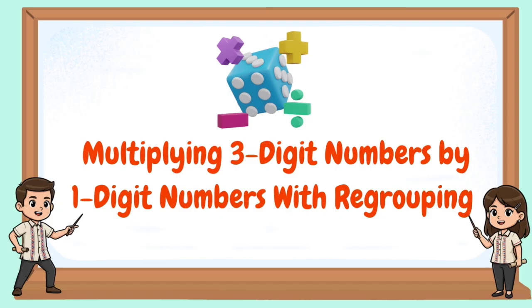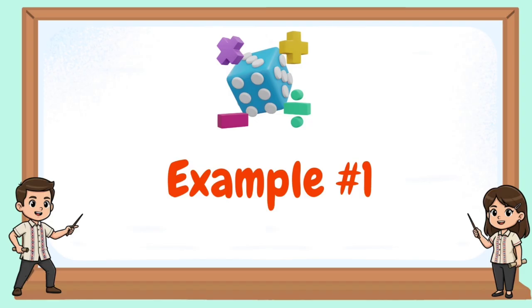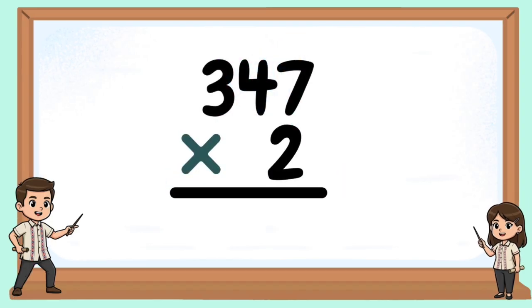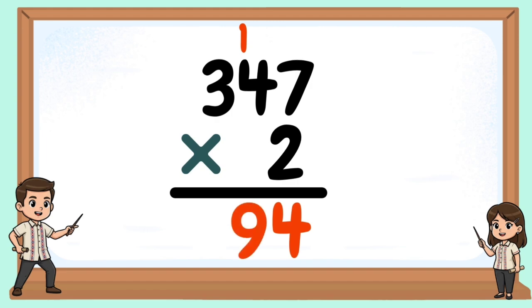Multiplying 3-digit numbers by 1-digit numbers with regrouping. Example number 1: 347 times 2. 2 times 7 equals 14 — bring down 4, carry 1. 2 times 4 equals 8, plus 1 is 9. 2 times 3 equals 6. 694 is our product.